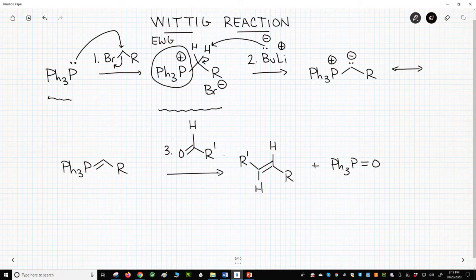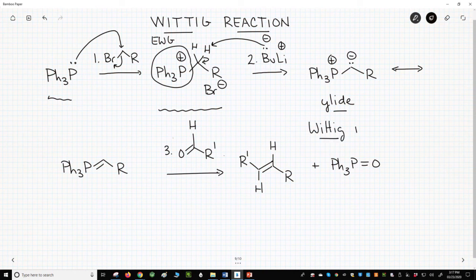The product of the reaction is an example of an ylid. Ylids are structures in which adjacent different atoms have opposite charges. This structure is a phosphorus ylid and is sometimes called a Wittig reagent.